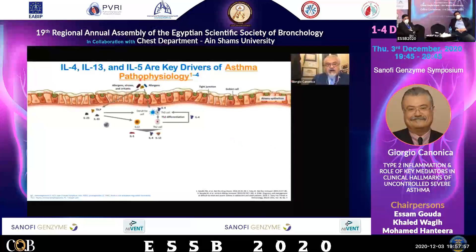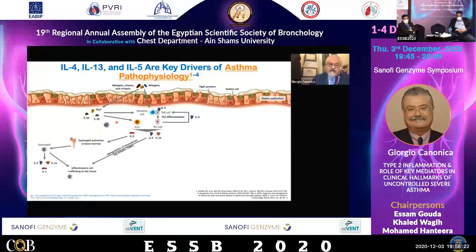The outdoor stimuli first induce alarmins — IL-25, IL-33, and TSLP. These alarmins act on ILC2 cells. This means that eosinophils are then activated in the bone marrow and included in trafficking to the tissues. There is also an upregulation of different mediators released by them.